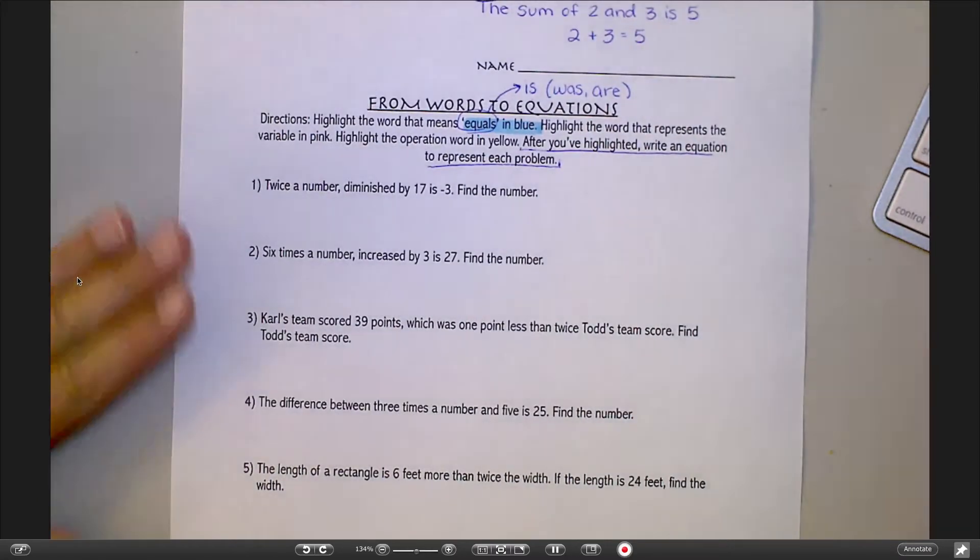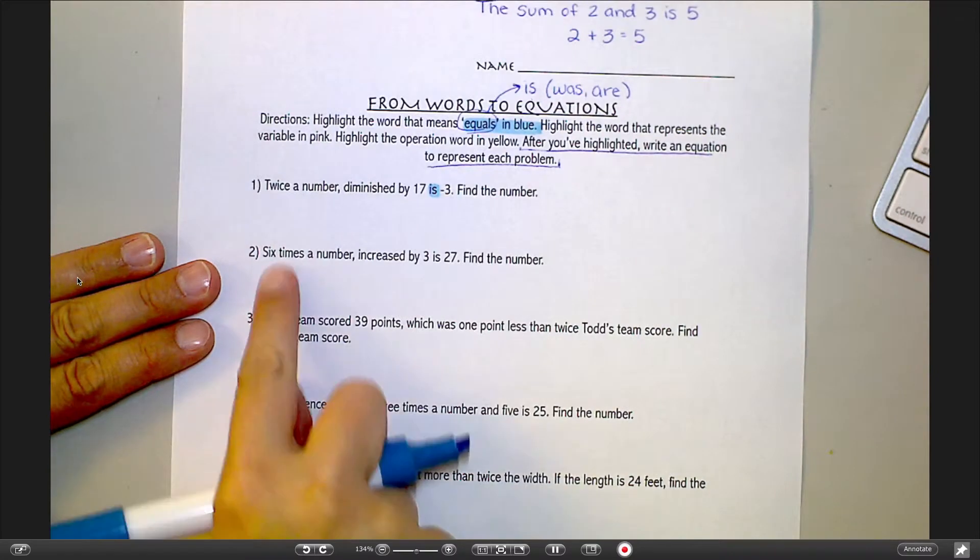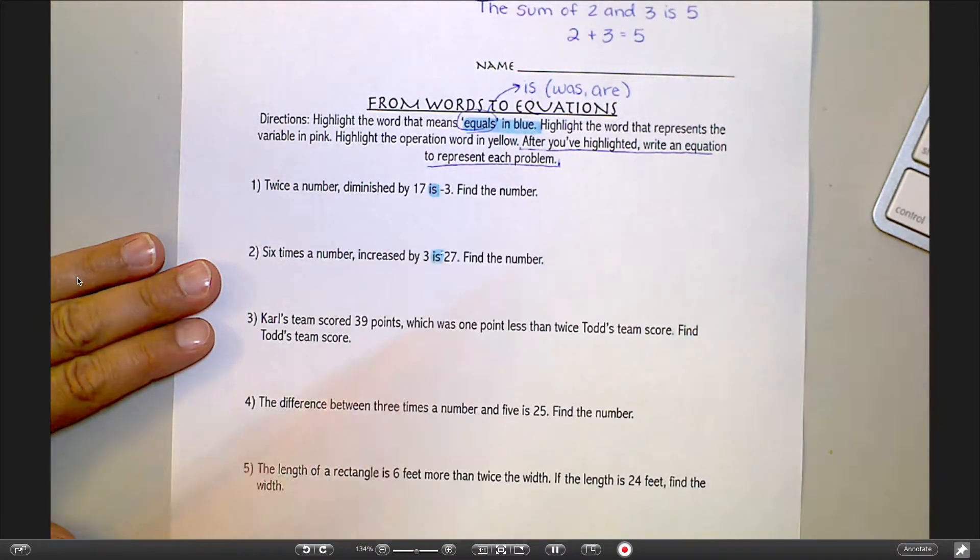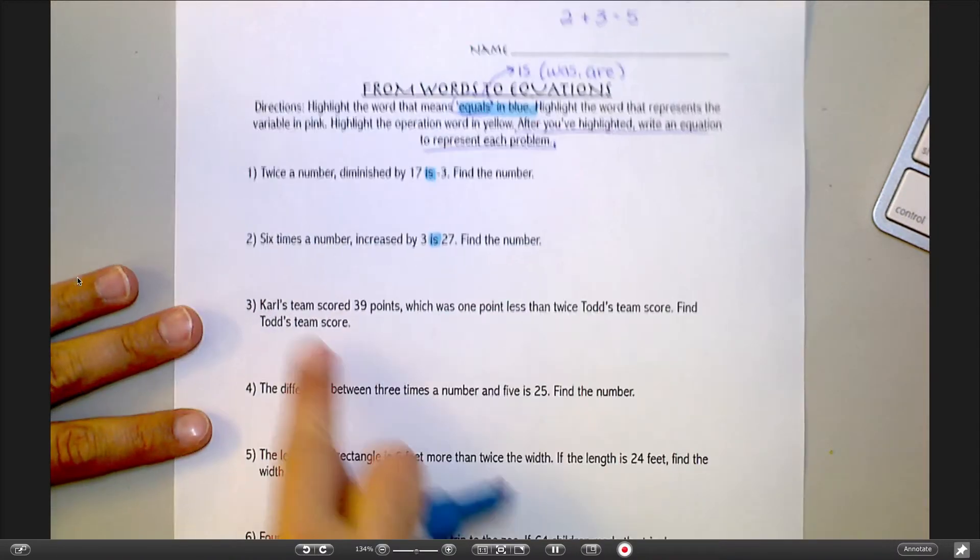I'm going to skim through all 8 of these and just do all of those in one shot. That way I'm not switching the markers back and forth. So twice the number diminished by 17 is negative 3. 6 times the number increased by 3 is 27. See how I'm doing that? I'm just looking for the is, and that's going to be important later on.